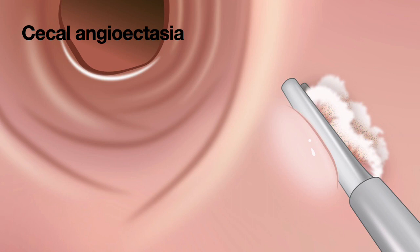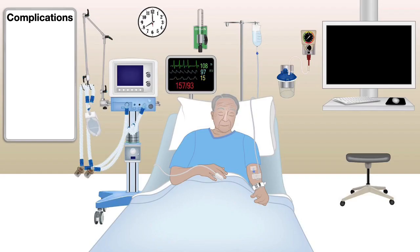In terms of complications of epinephrine, these are mostly cardiovascular. One should consider cardiac arrhythmias and hypertension. If too much epinephrine is injected in an older patient with severe atherosclerotic vascular disease, it can precipitate bowel ischemia — something important to keep in mind.